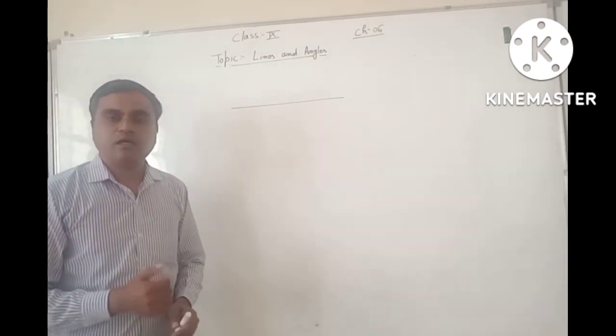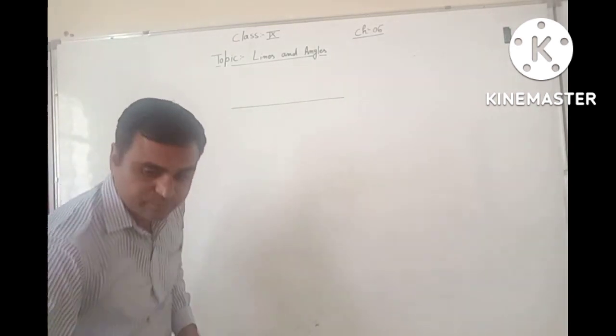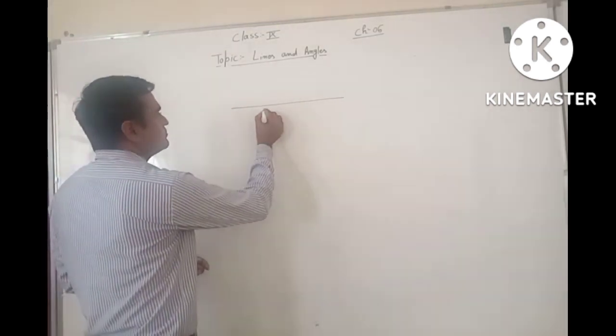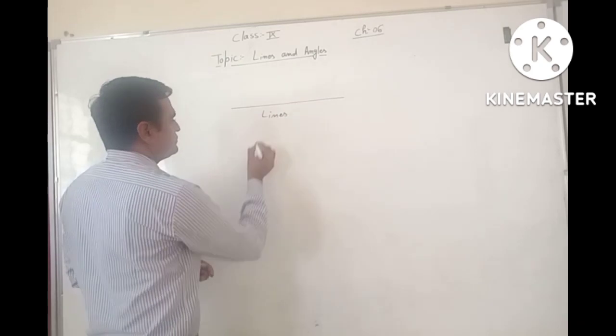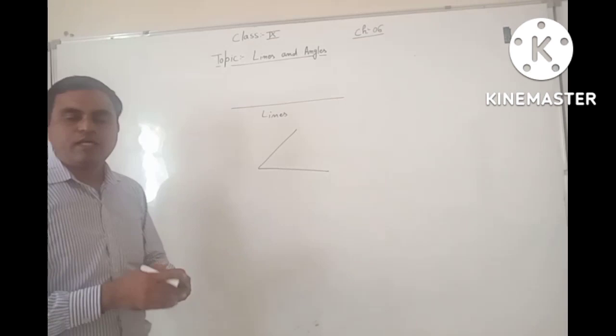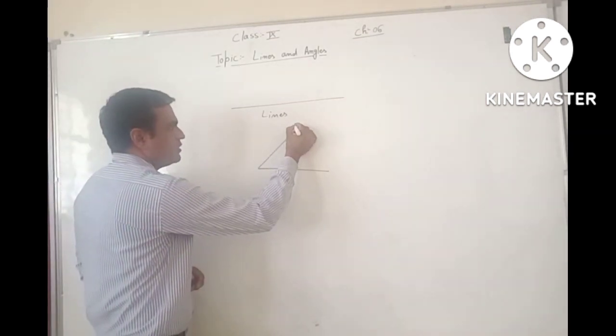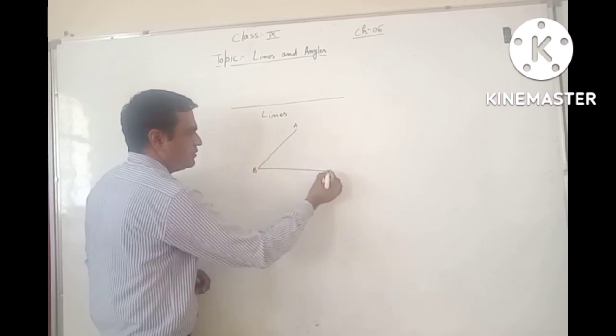Next is Angles. In other words, Angles. This is Lines. And the angle is... When I join two lines, name it as A and B.